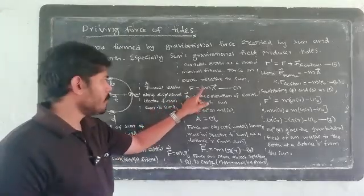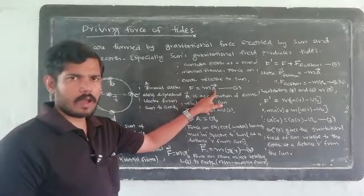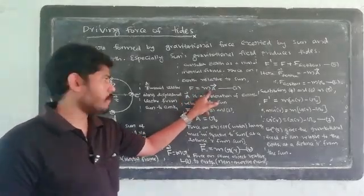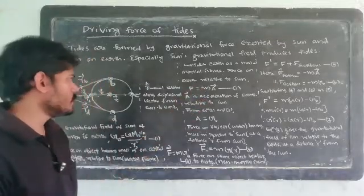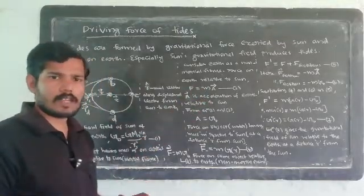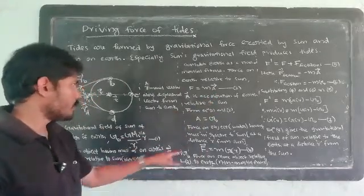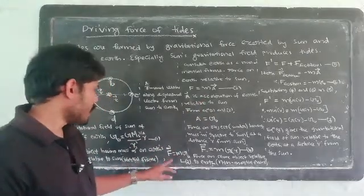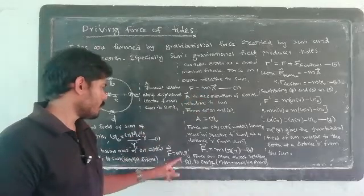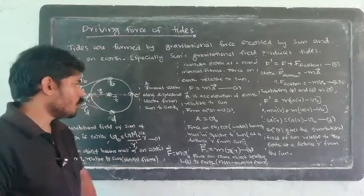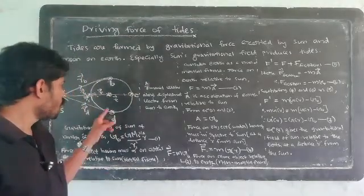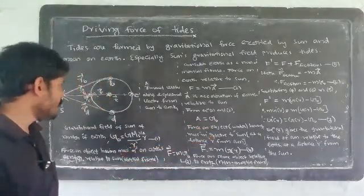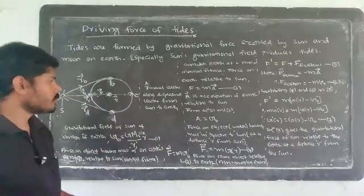Applying Newton's second law: force equals mass times acceleration. The force on the earth by the sun gives earth's acceleration A = G0. So the acceleration of the earth relative to the sun equals the gravitational field at the center of the earth due to the sun.